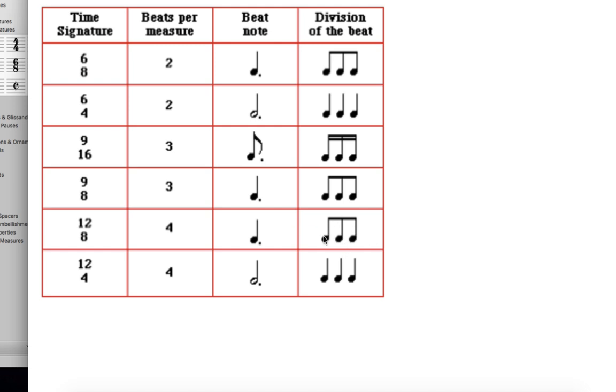Because here's another way you can think about this. This, three eighth notes, times this, three times four, equals this top number. So 12 eighth notes.